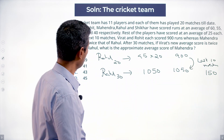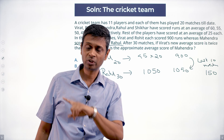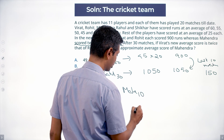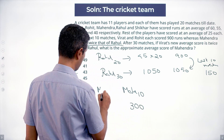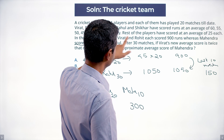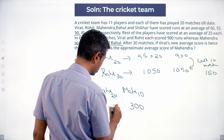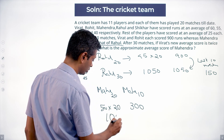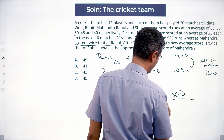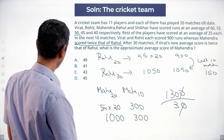Now we bring Mahendra into the picture. Mahendra scored twice that of Rahul in those 10 matches. Rahul scored 150, so Mahendra scored 300 in the last 10 matches. In the first 20 matches, Mahendra had an average of 50, so he scored 1000. In the last 10 he scores 300, giving a total of 1300. His average is 1300 ÷ 30, which is 43.33 — closest to 43.